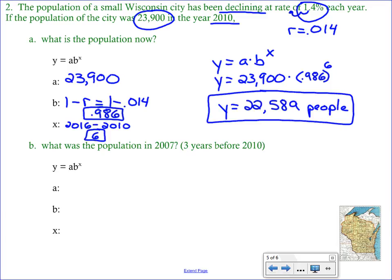So in Part B, we are using much of the same startup information. We are talking about the same city, the same rate of decline, and the same starting value. So we're going to go ahead and fill in our a value as 23,900, and our b value as 0.986. Nothing has changed with the initial setup. The question now is, what will the time be? And it says, what was the population in 2007?